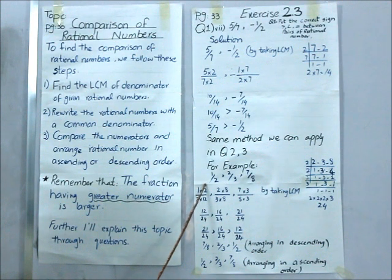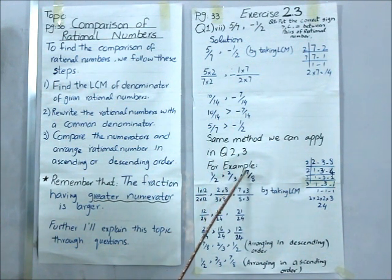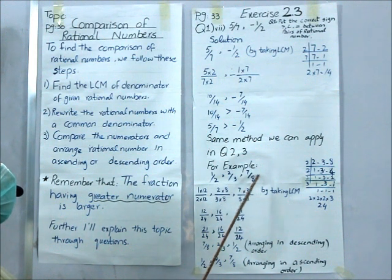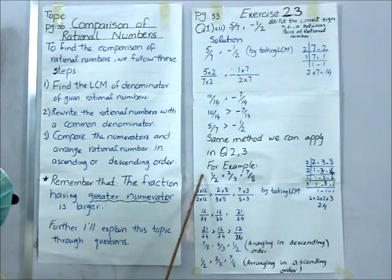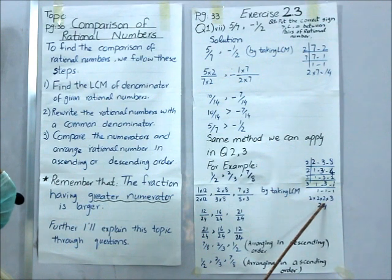For example, I have taken one question as an example. I have 3 rational numbers: 1 by 2, 2 by 3, and 7 by 18. All denominators are different. Whenever we want to arrange rational numbers in descending or ascending order, we must have the same denominator. For this purpose, I take the LCM and I got 24 as the common denominator.